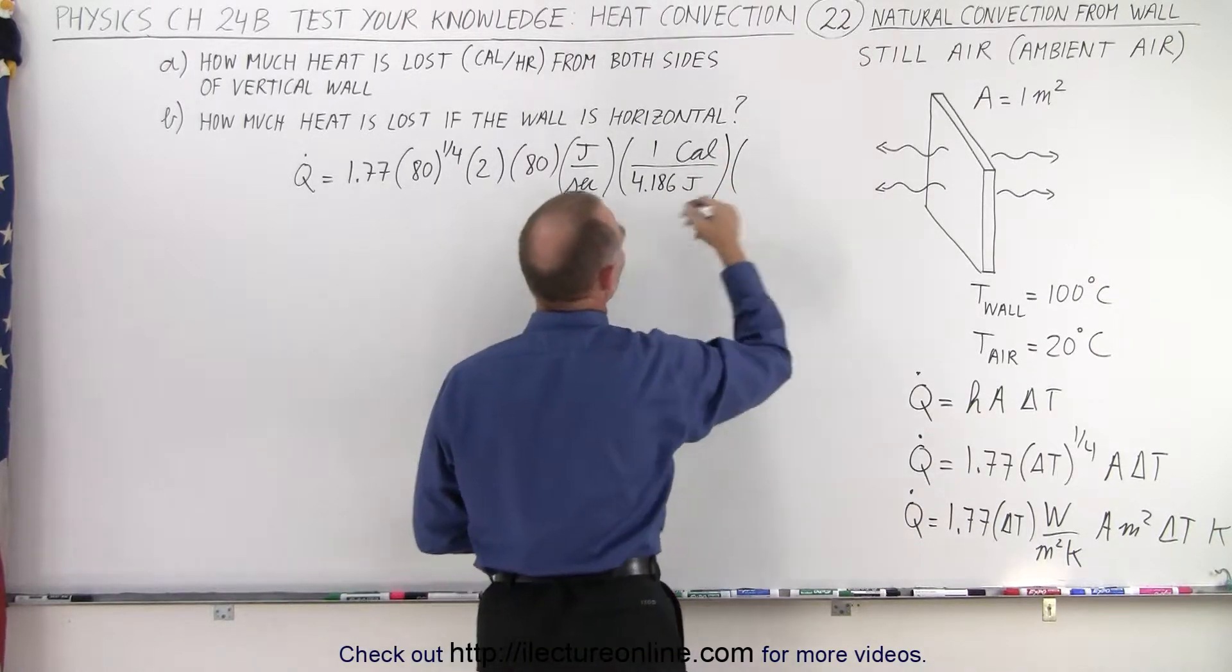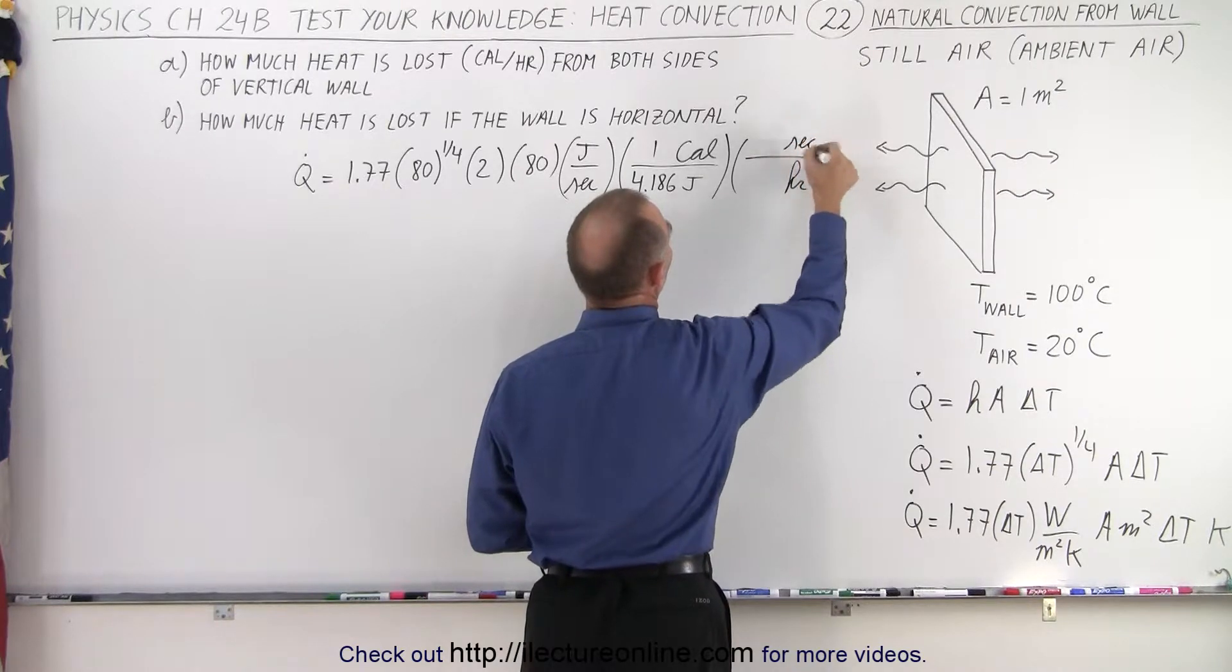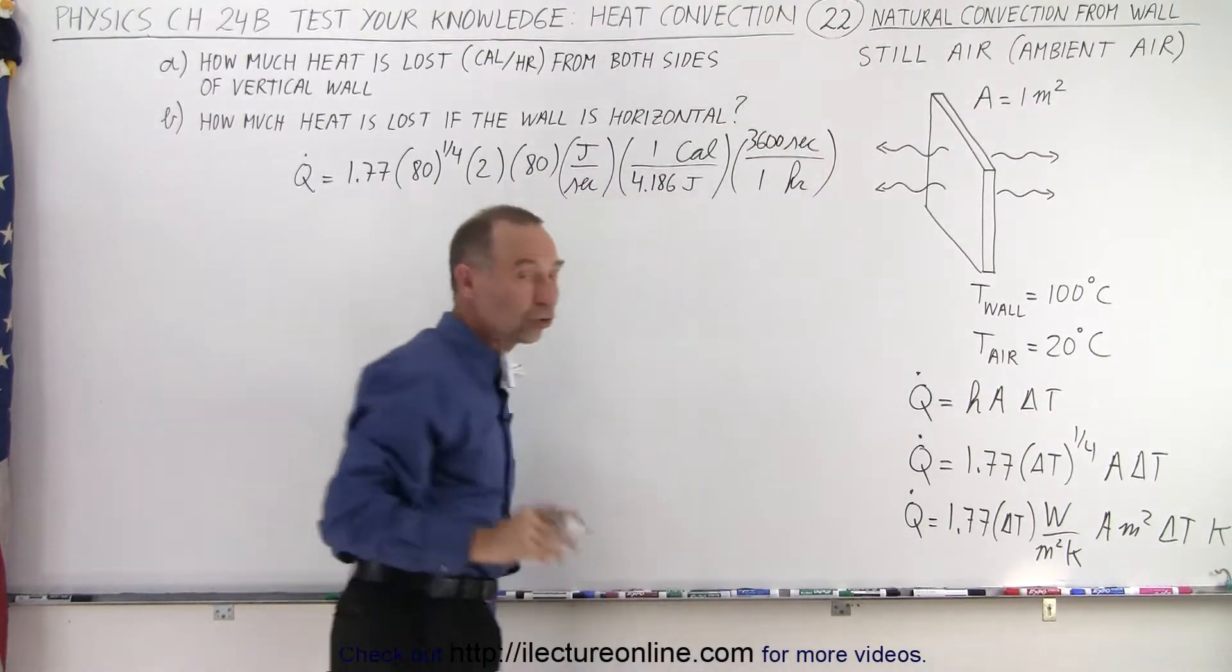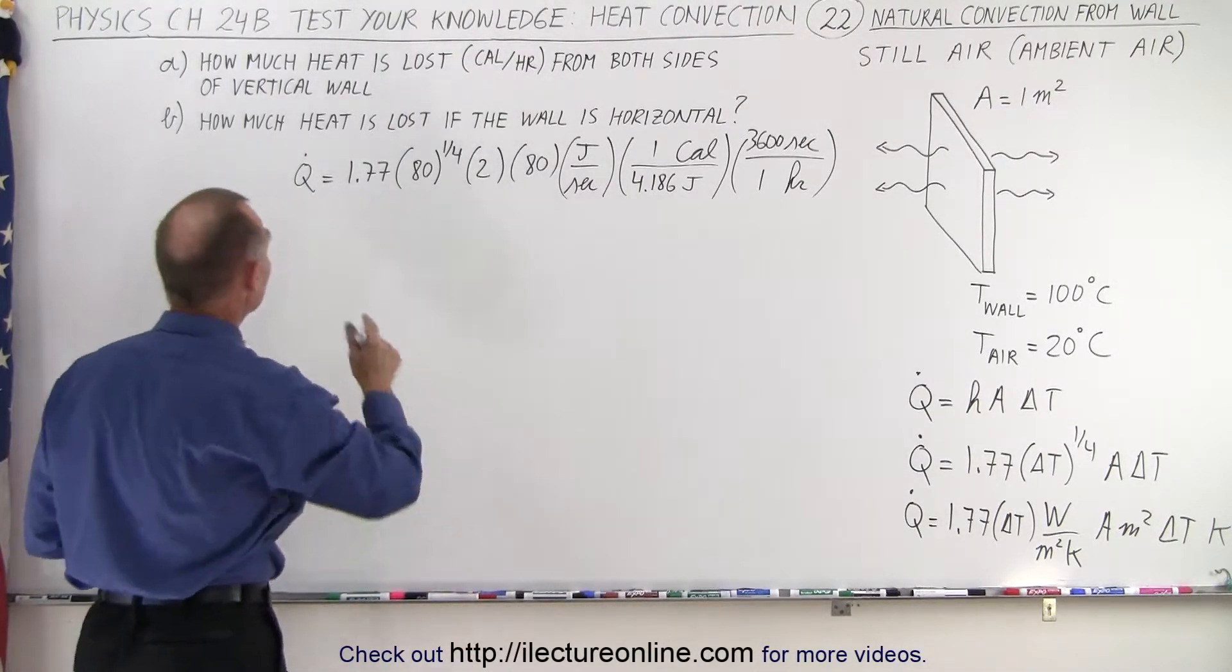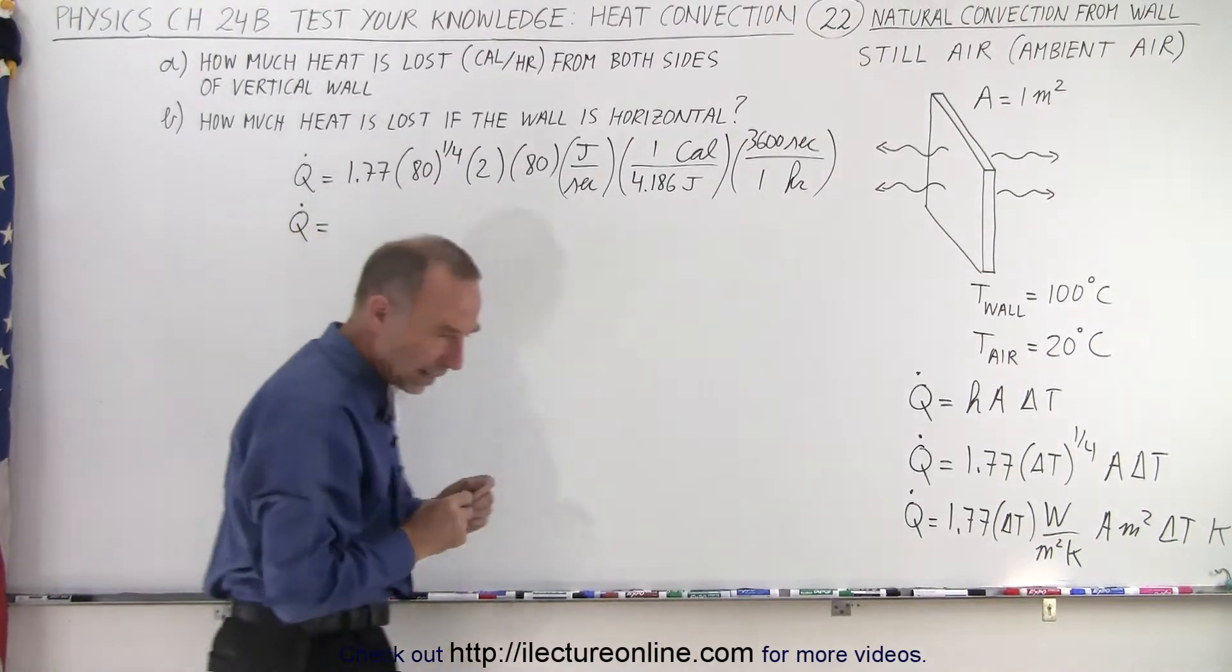And then if we want to go to hours from seconds, we want hours in the bottom and seconds in the top. And of course, one hour is 3600 seconds. So that should give us the heat flow away from the wall in an hour in terms of calories per hour. So let's go ahead and do that and see what we get.